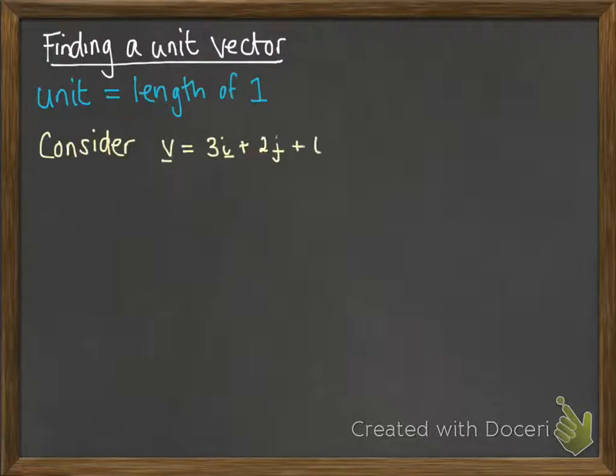So if we think about this vector v, this is 3i plus 2j plus 6k. We're looking for the unit vector that is in the same direction as v.